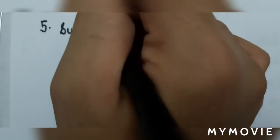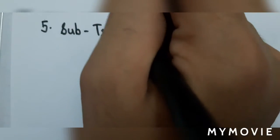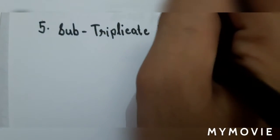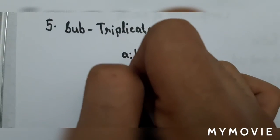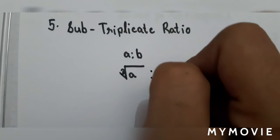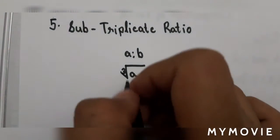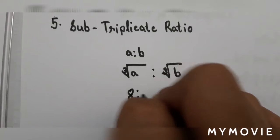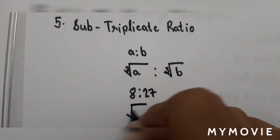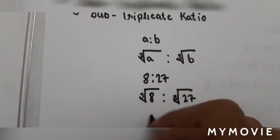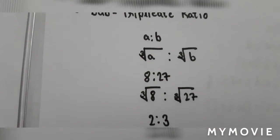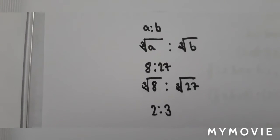Next comes subtriplicate ratio. If you are provided with A:B, you should find the cube root of A and B, giving ∛A : ∛B. For example, if 8:27 is given, the cube root of 8 is 2 and the cube root of 27 is 3. So this is our composition of ratios.